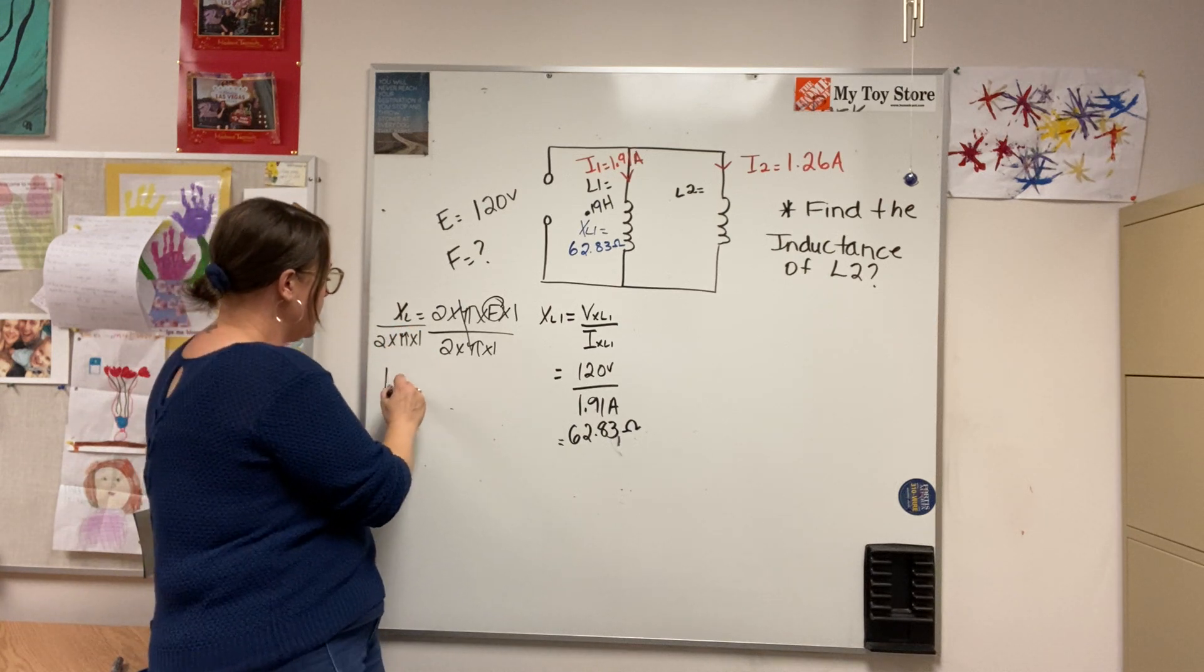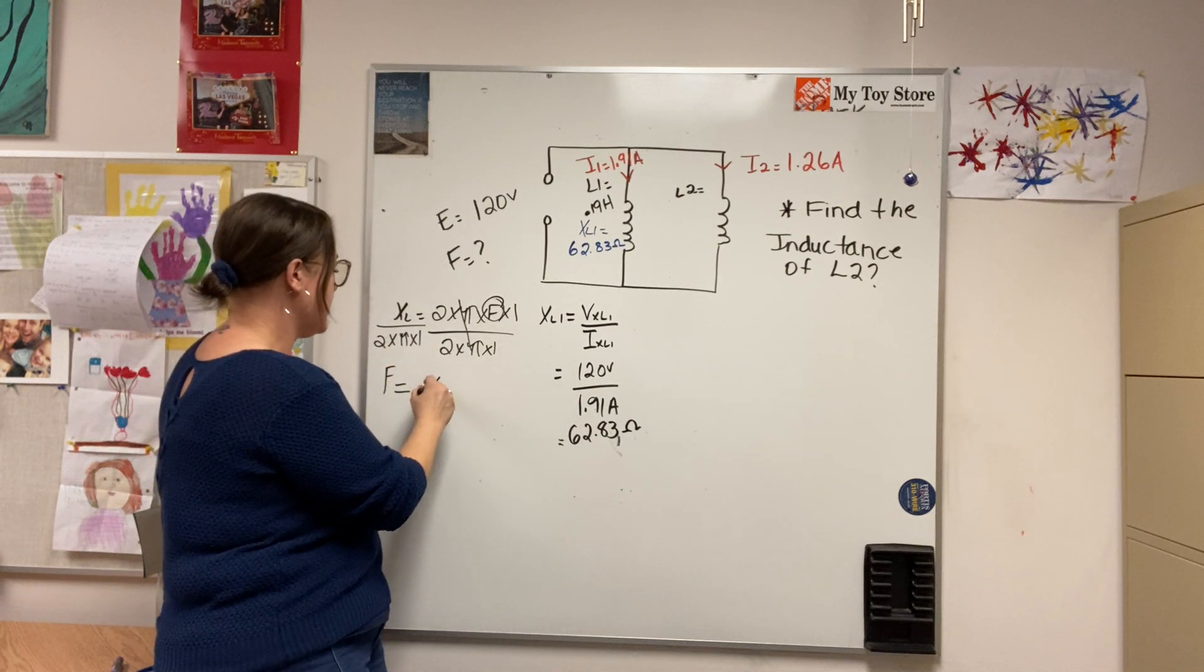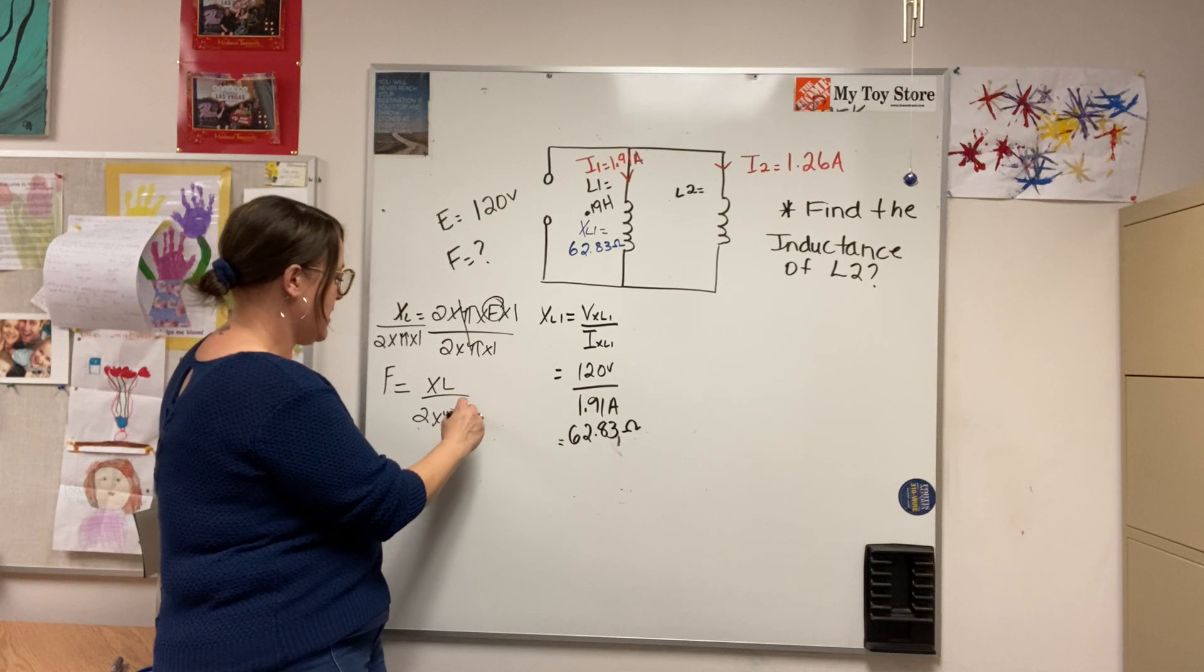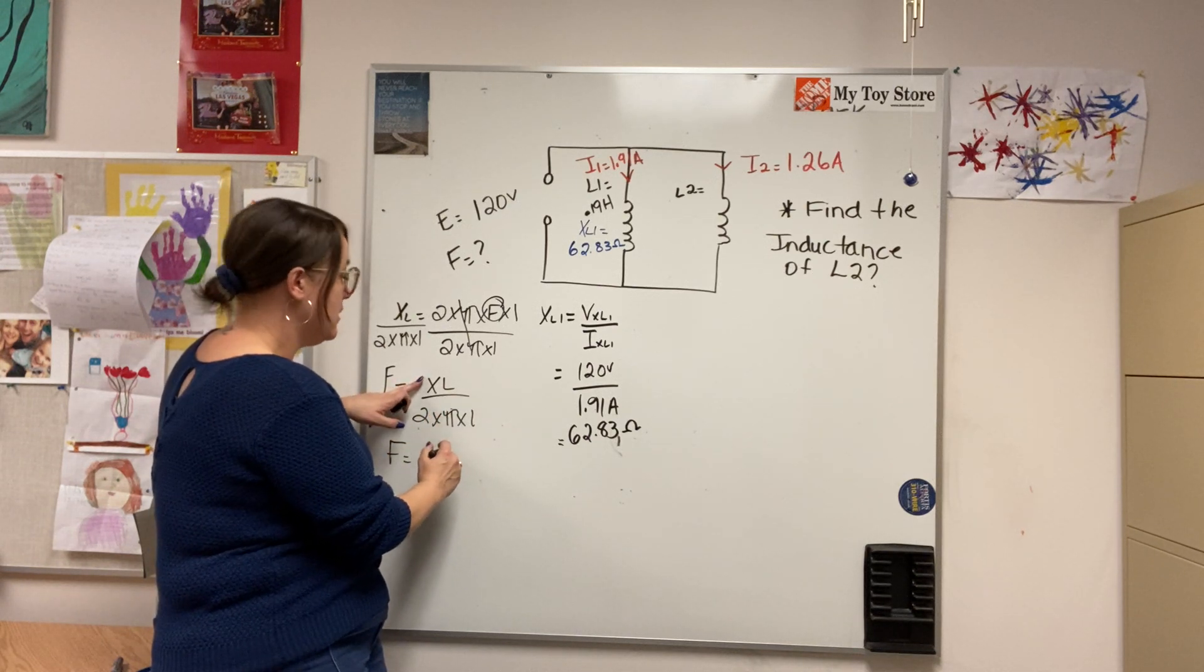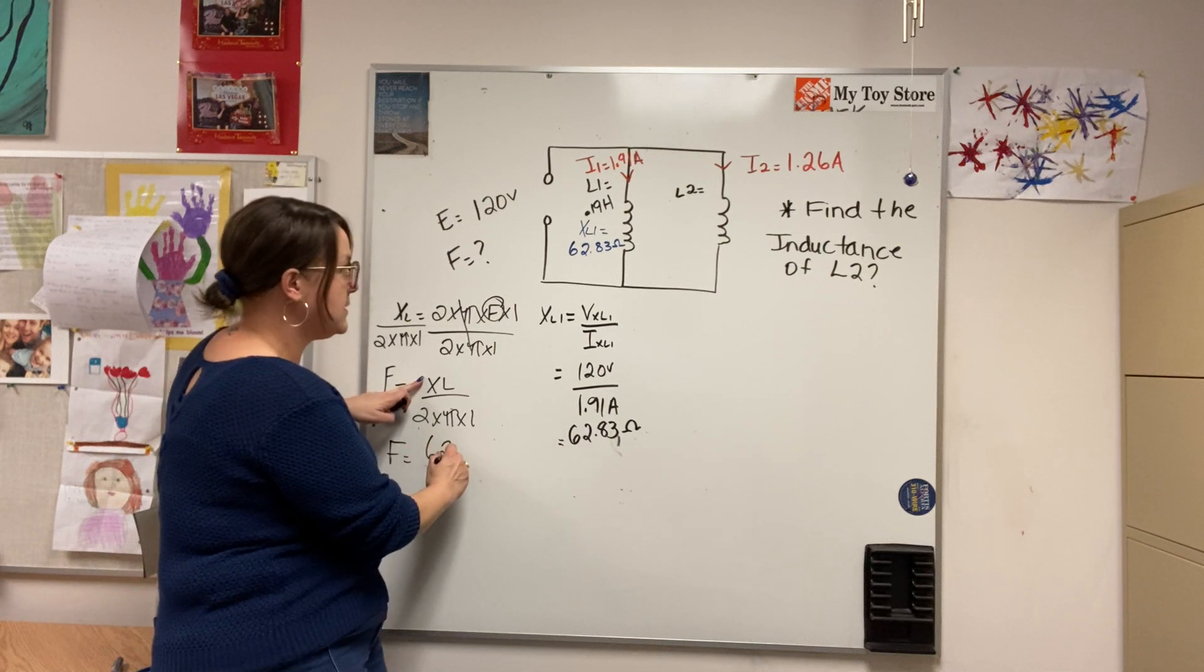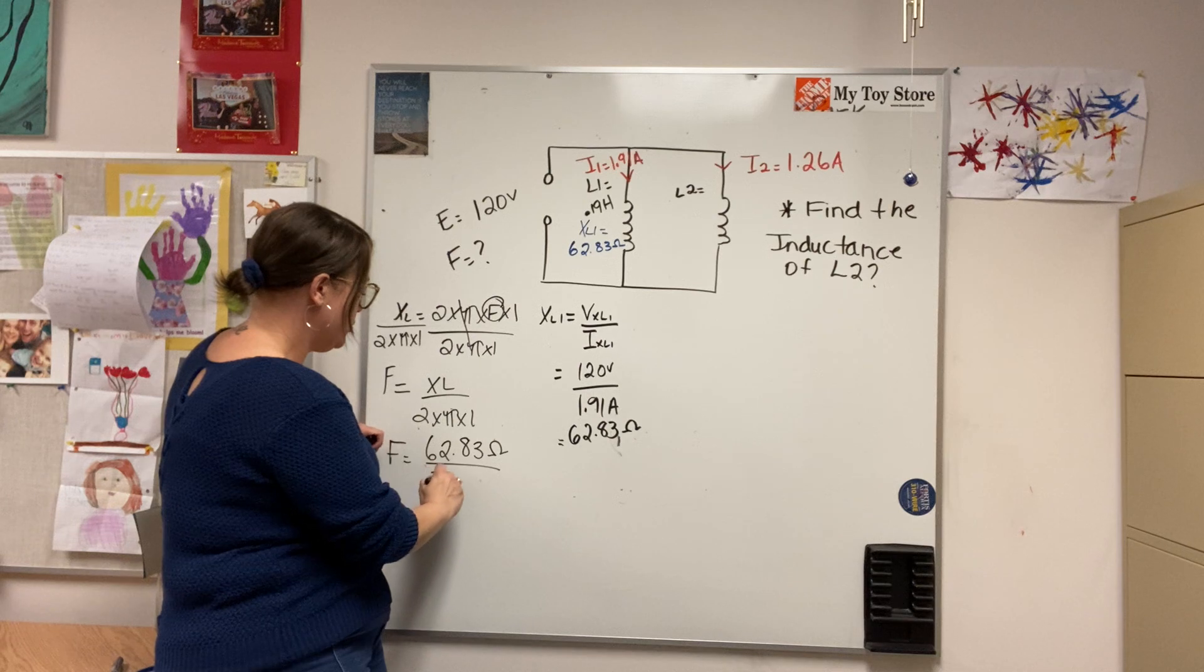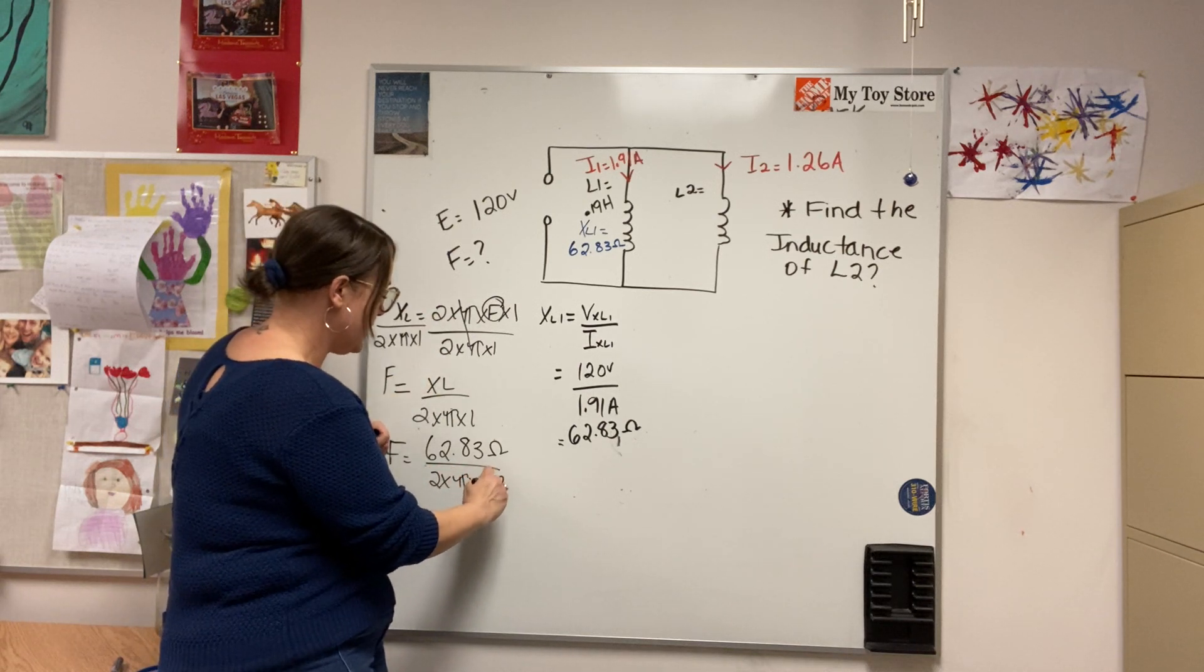So frequency equals XL divided by 2 times pi times L. Frequency equals XL, 62.83 ohms, divide that by 2 times pi times 0.19 henrys.